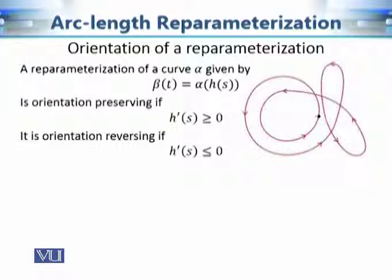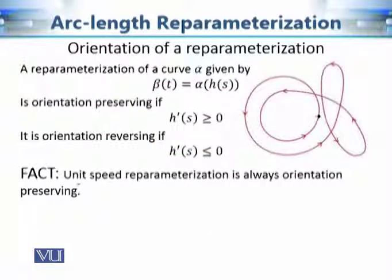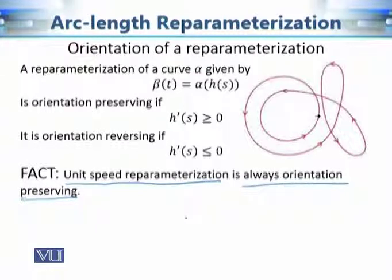Let us check whether this new parameterization has the same orientation or a different orientation — in other words, if alpha goes from point A to B, does beta go in the same direction or the opposite direction? The check is: if h'(s) > 0, the re-parameterization is orientation preserving; if h'(s) < 0, it is orientation reversing. In the case of the unit speed re-parameterization, this function always has non-negative derivative, so it is always orientation preserving.